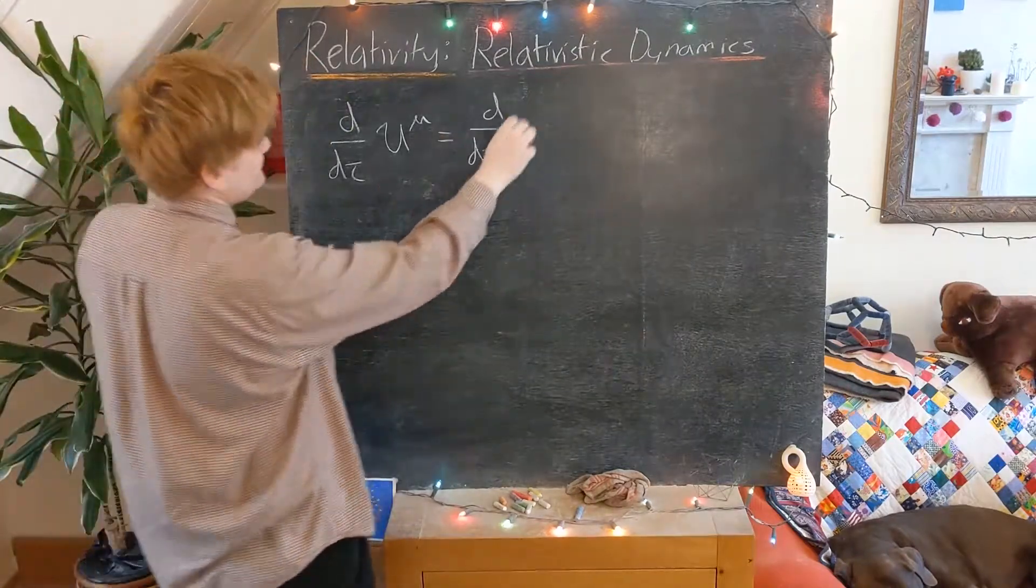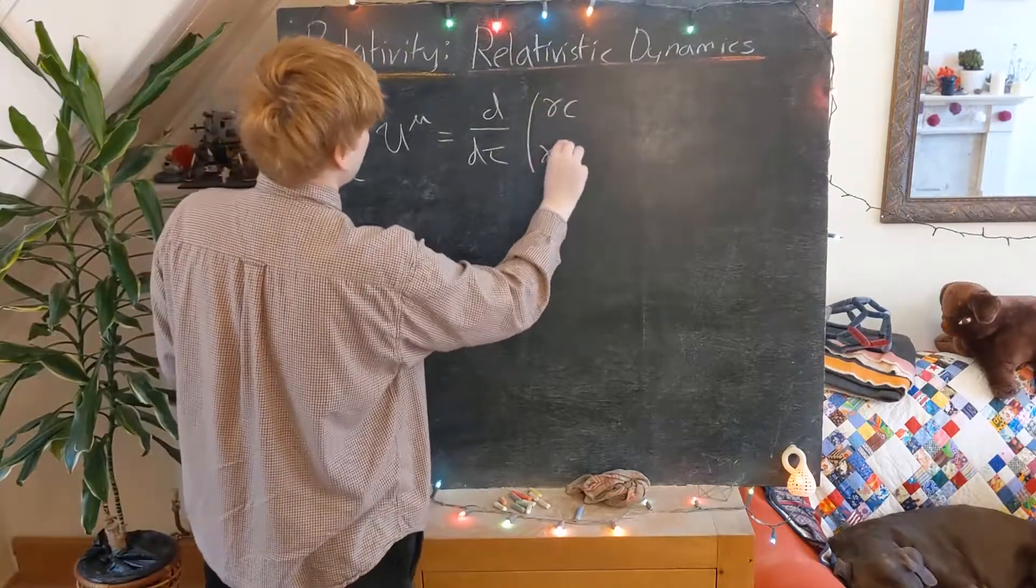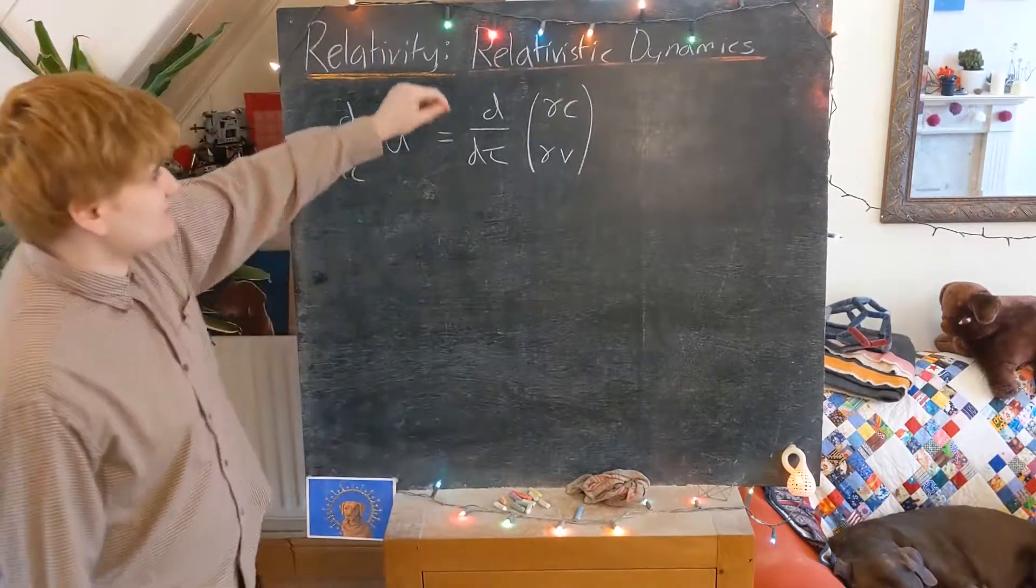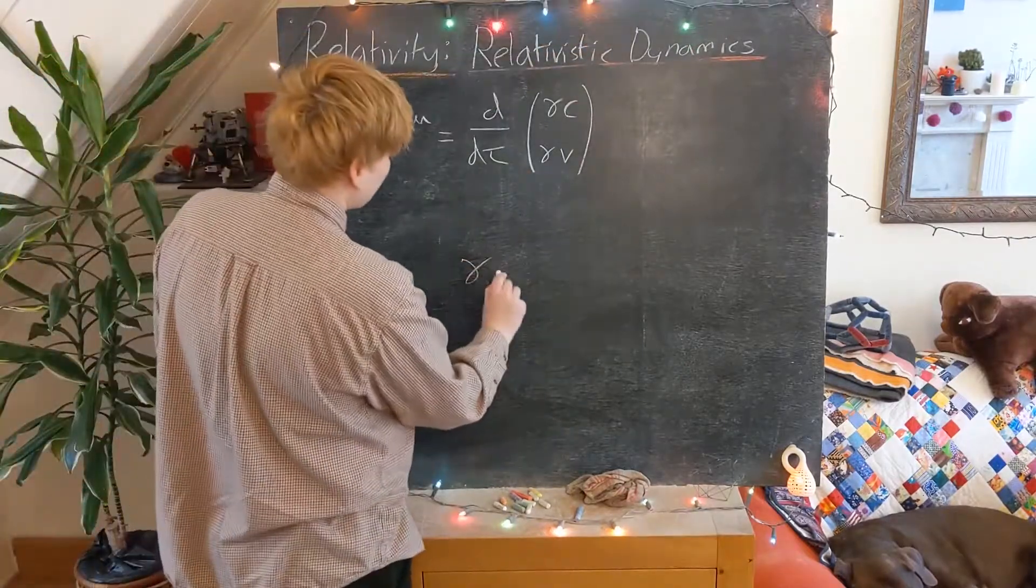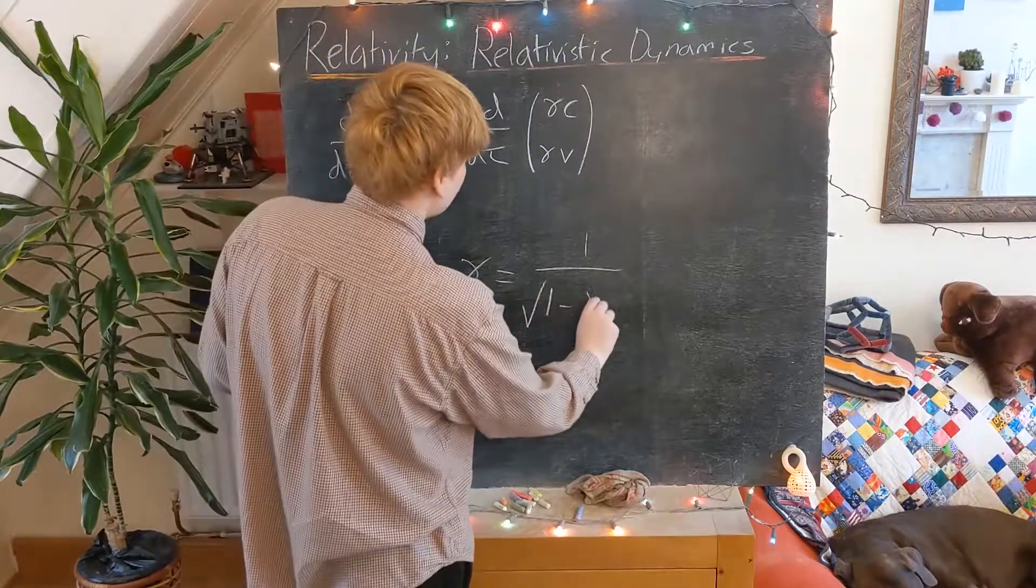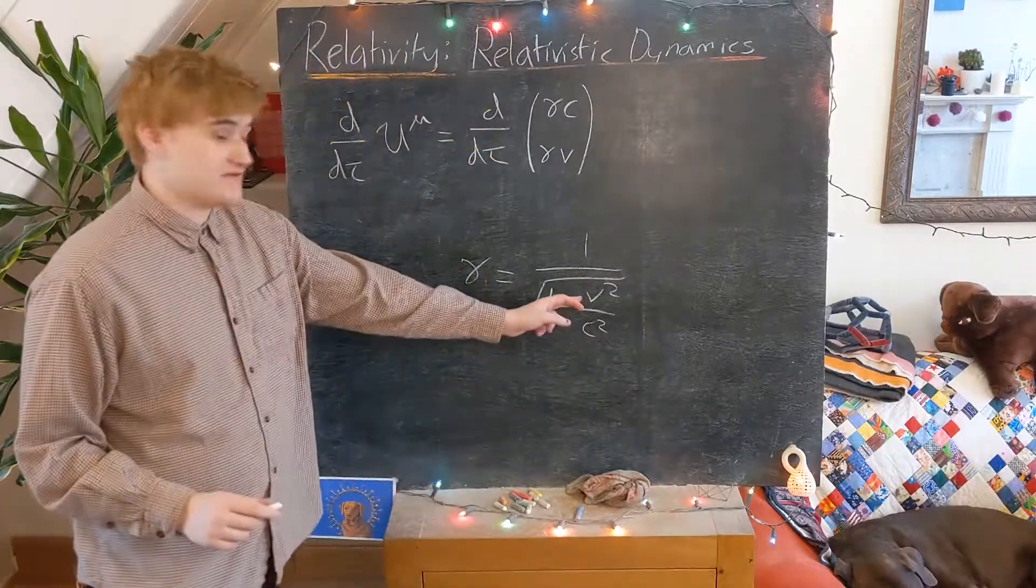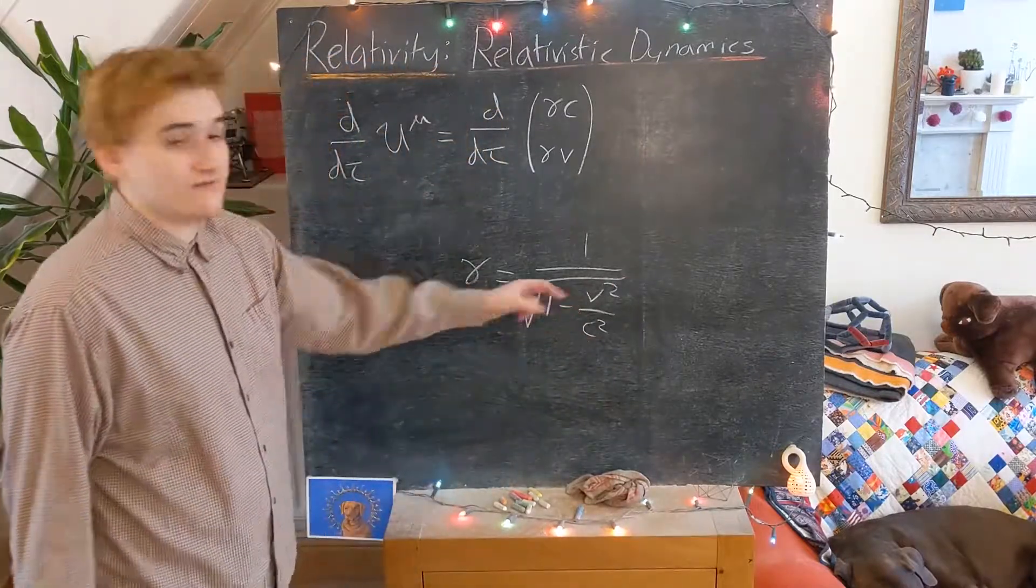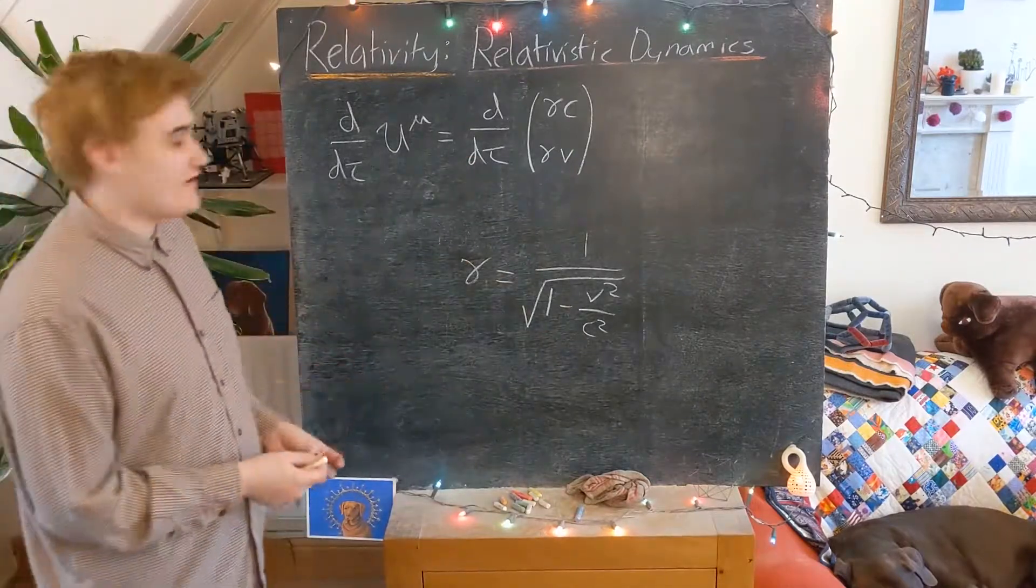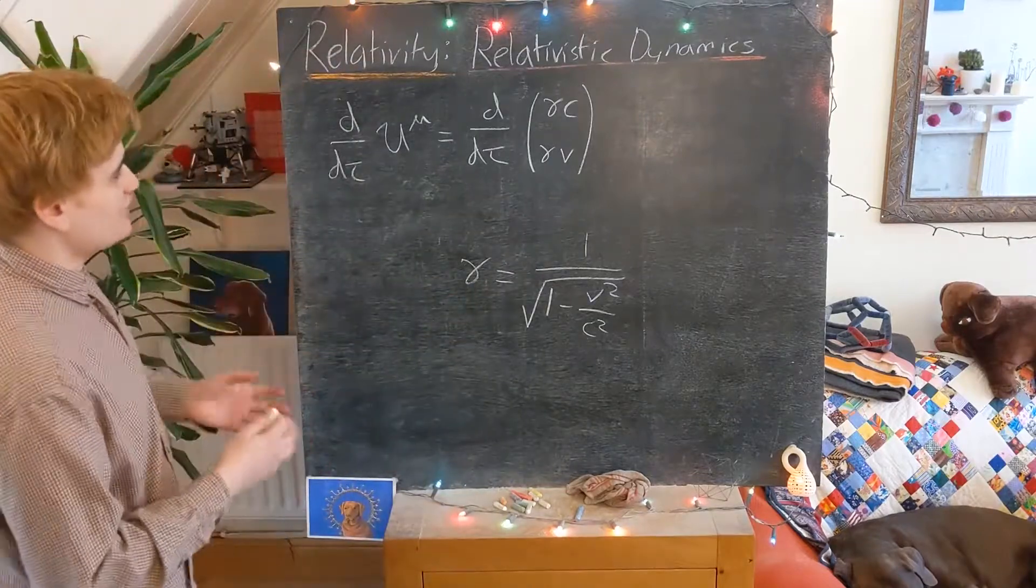And so just now plugging in the form of our 4-velocity, we're going to see that this is going to be the tau derivative of our 4-velocity vector. But now what we need to realize is that this gamma, it does somehow kind of depend on this coordinate velocity. If this coordinate velocity now is not constant, i.e. it's changing with some acceleration, this gamma is also not going to be a constant.